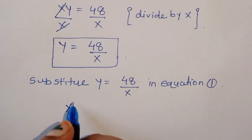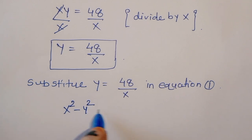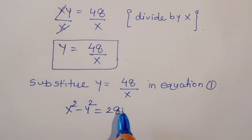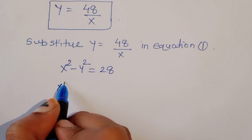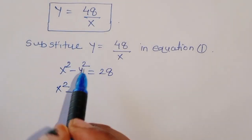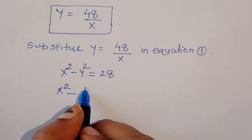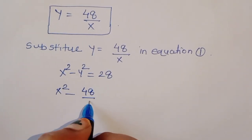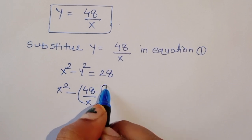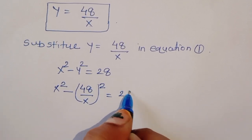Now we substitute y = 48/x into equation 1. Equation 1 is x² - y² = 28, so we write x² - (48/x)² = 28.